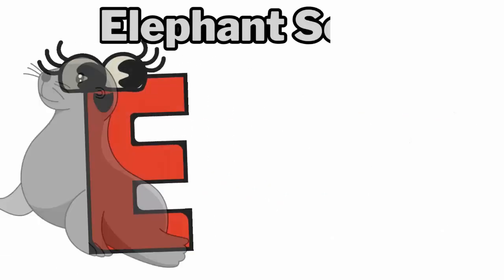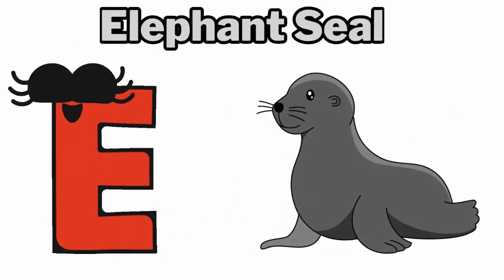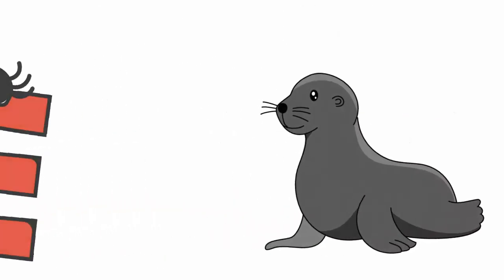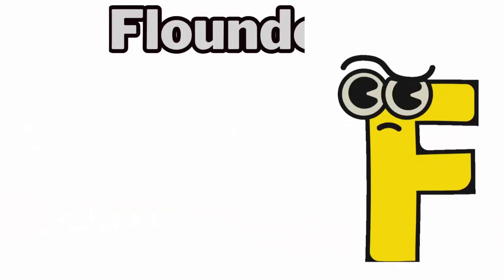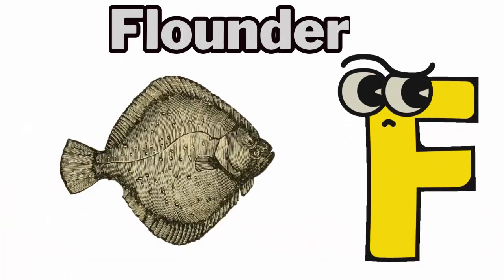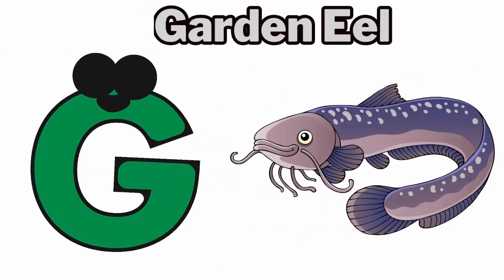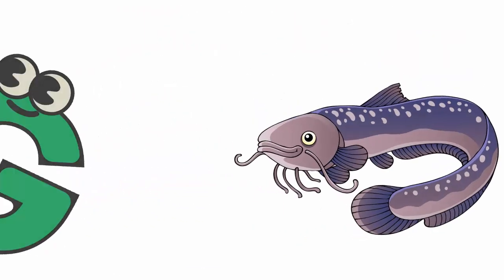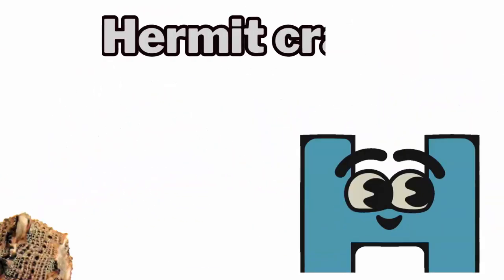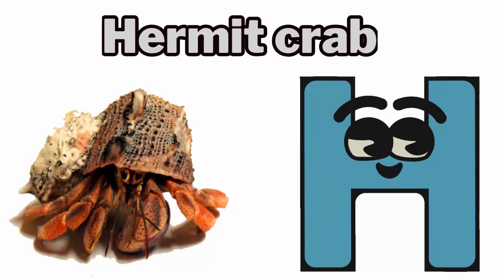E for elephant seal. F for flounder. G for garden eel. H for hermit crab.